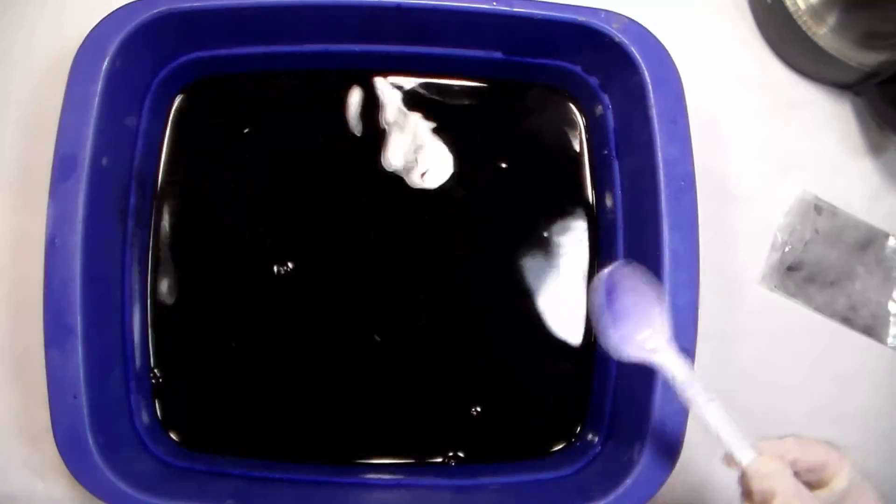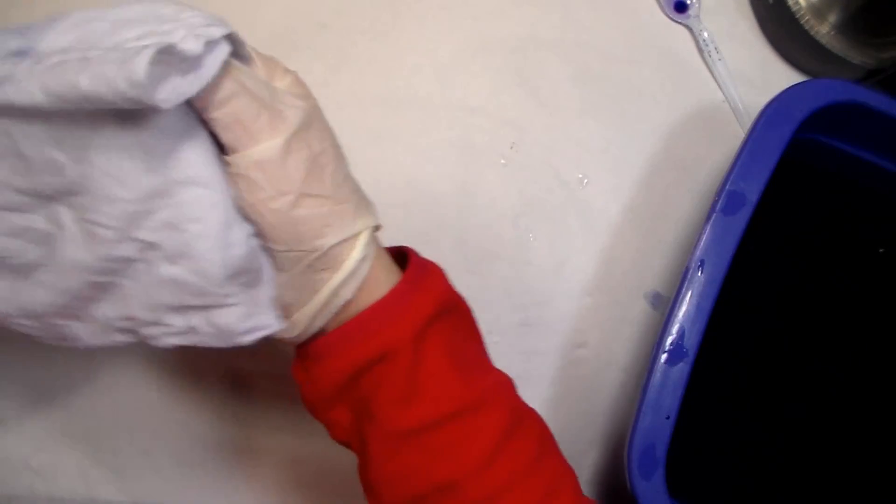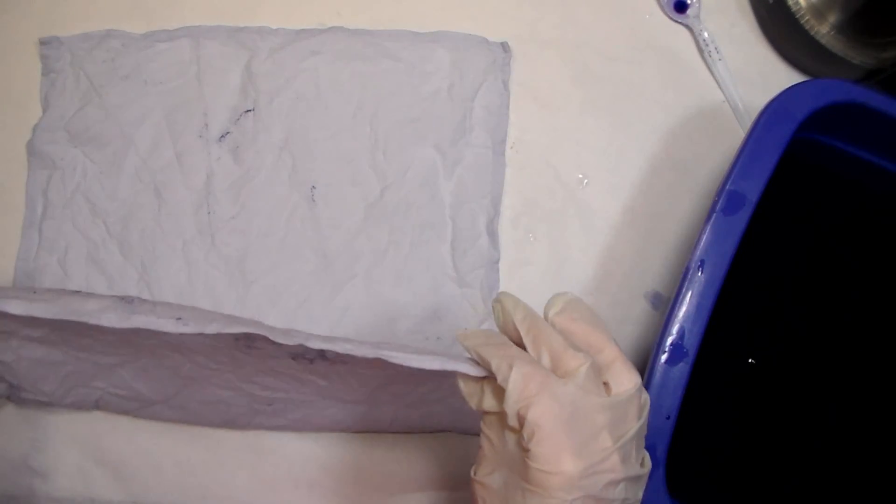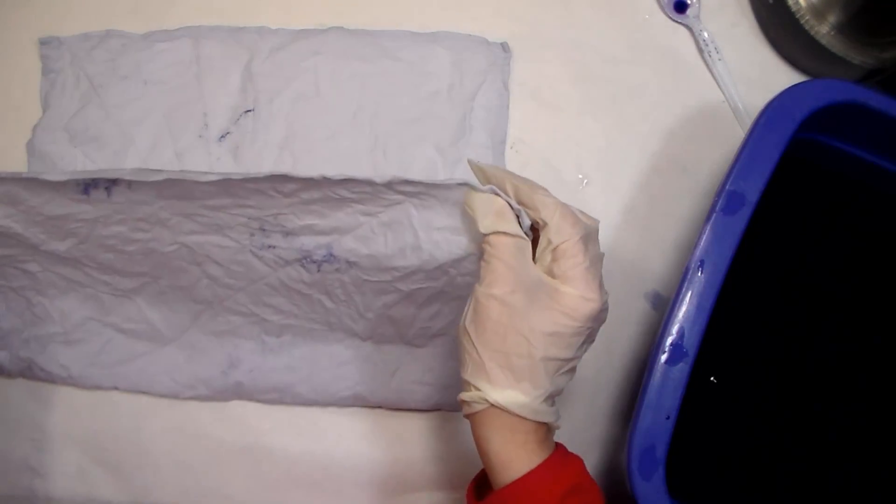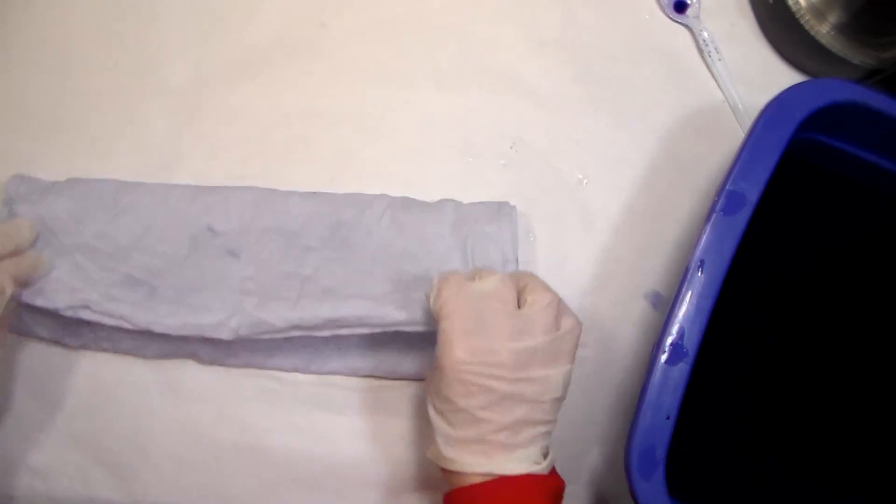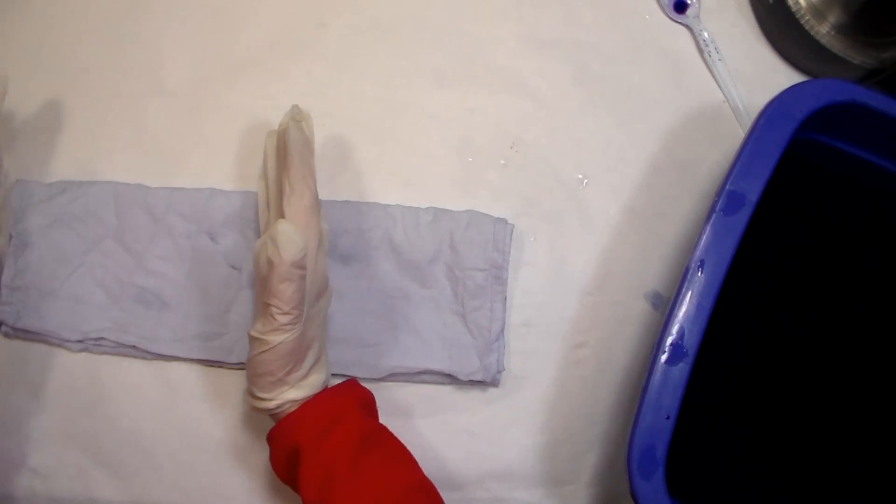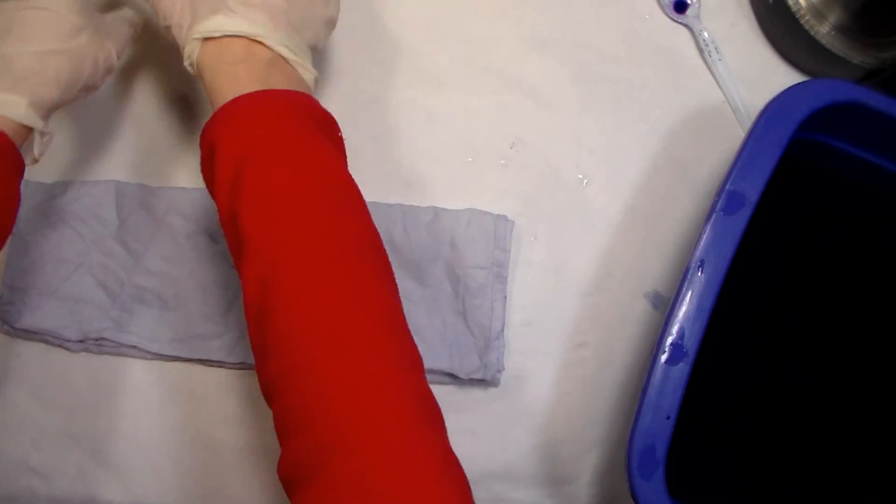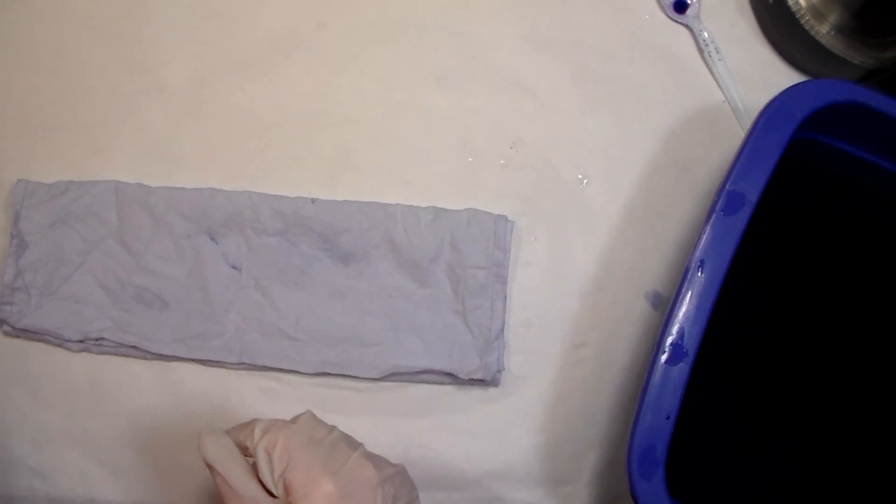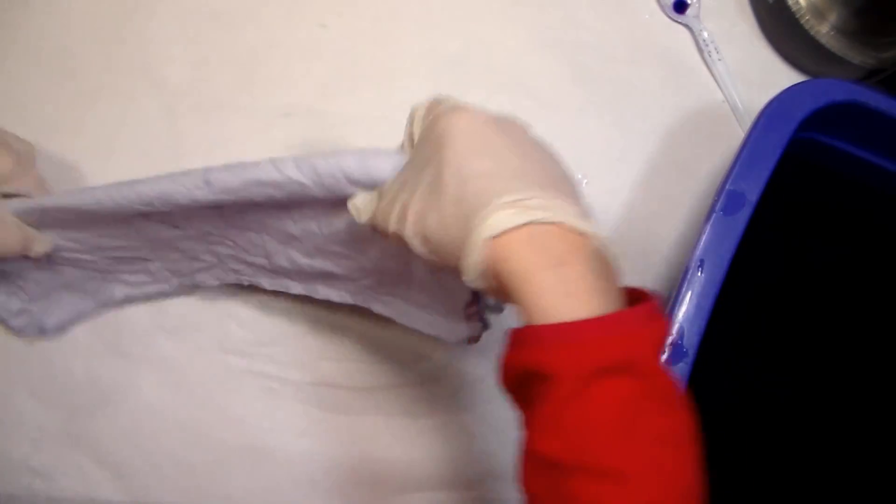So what you're going to do is take your fabric and you're going to fold it. I would do all this before you started the dye, but I wanted to have some to show you. So you're going to fold it in half twice for the placemats. You want to fold it so you have the width the way you're going to be dipping one side in so through the whole length of the placemat you're going to have color. Then you want to do the same to the napkin, just fold it in quarters.